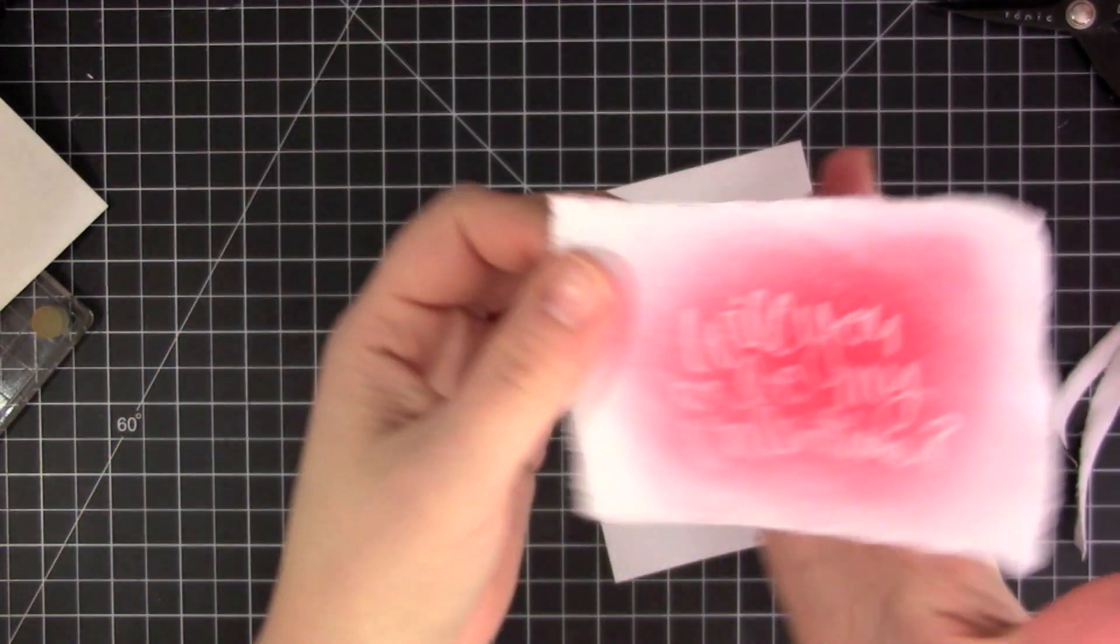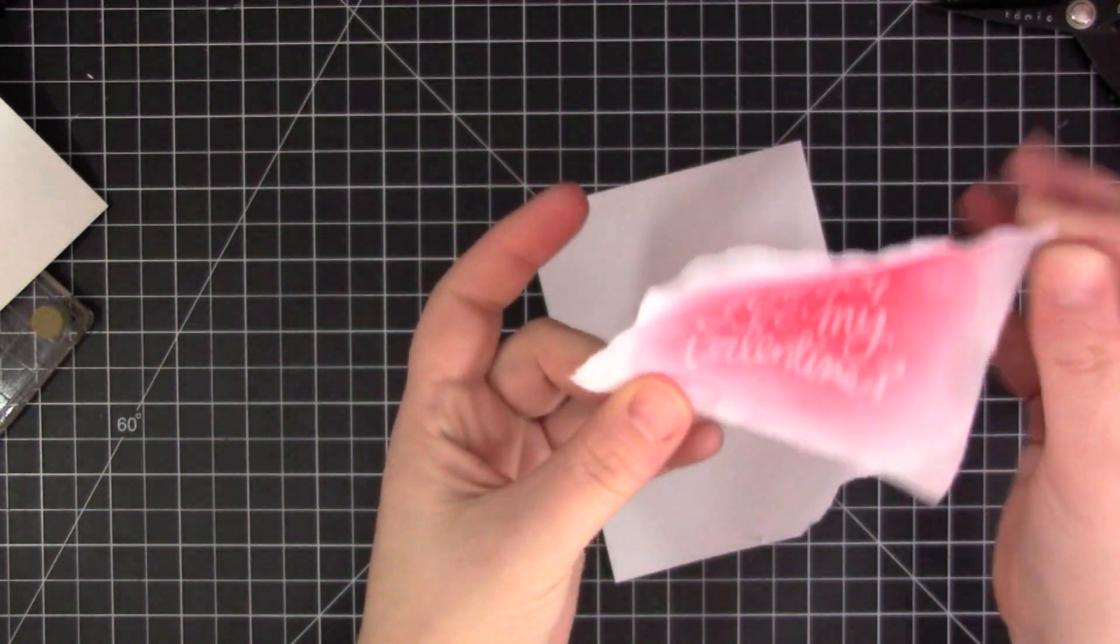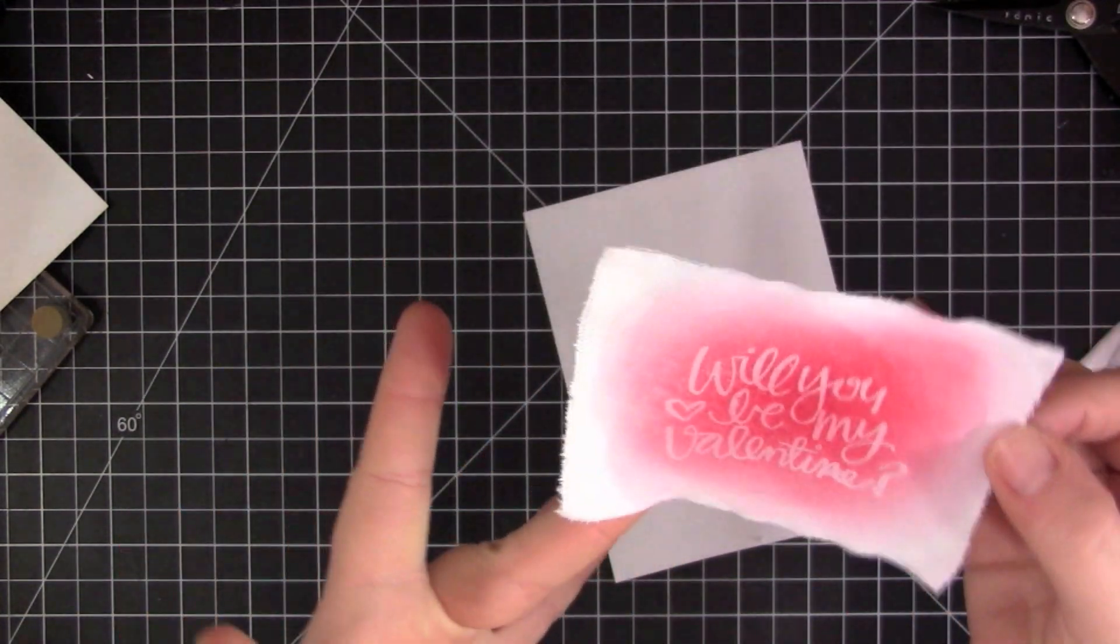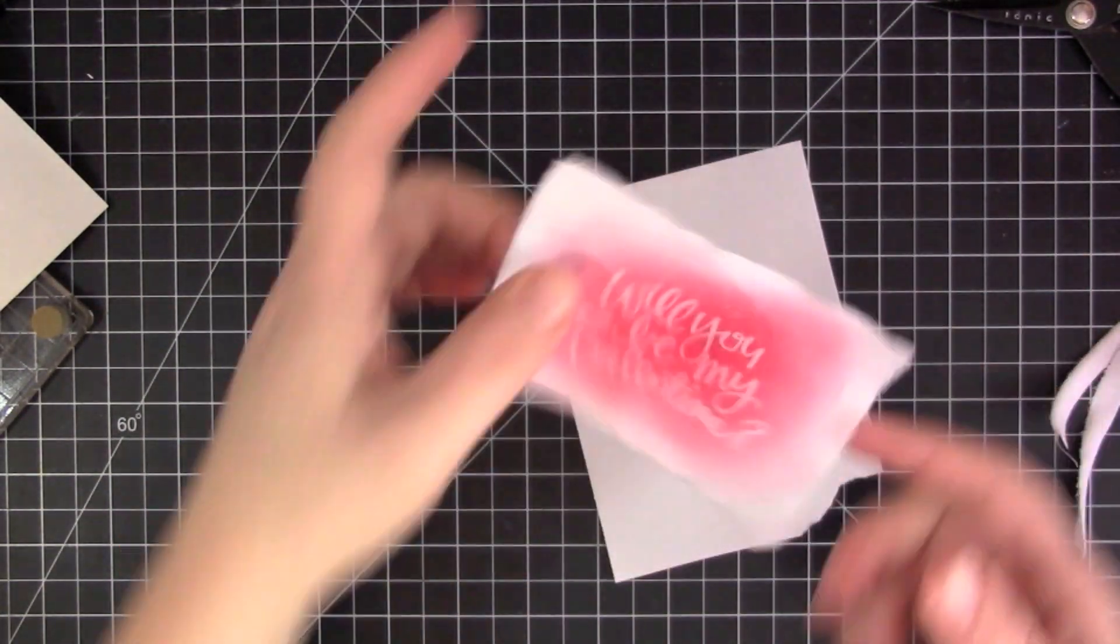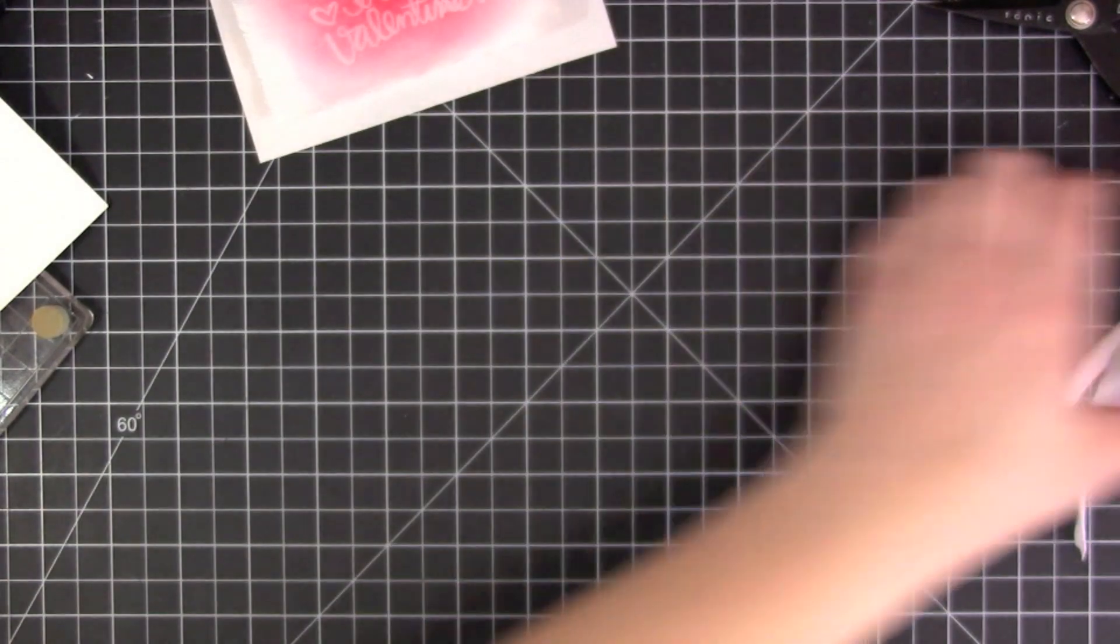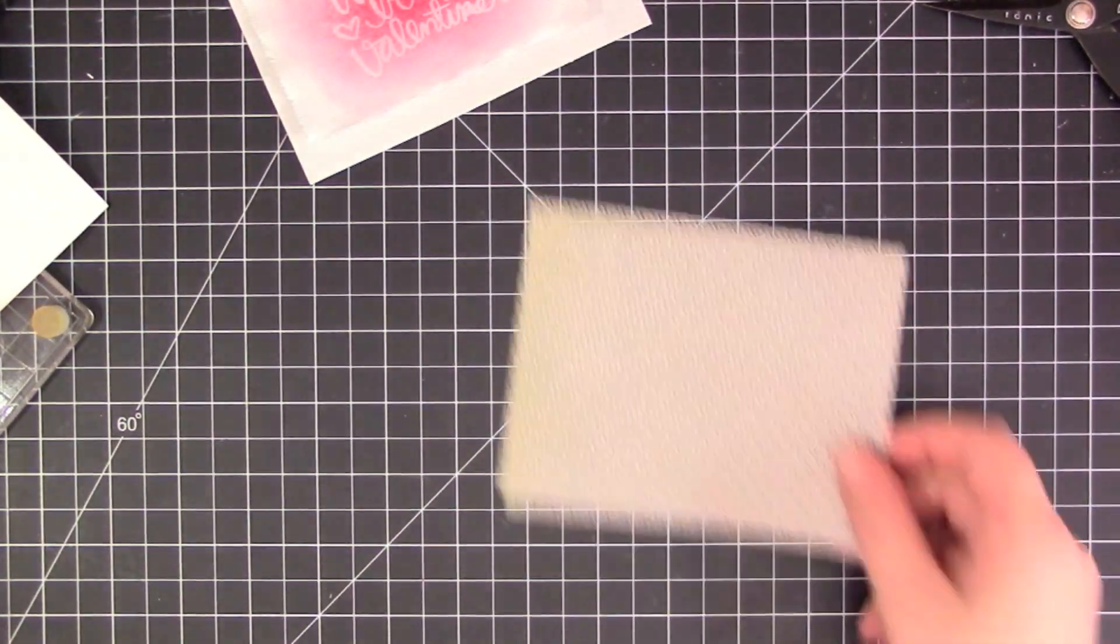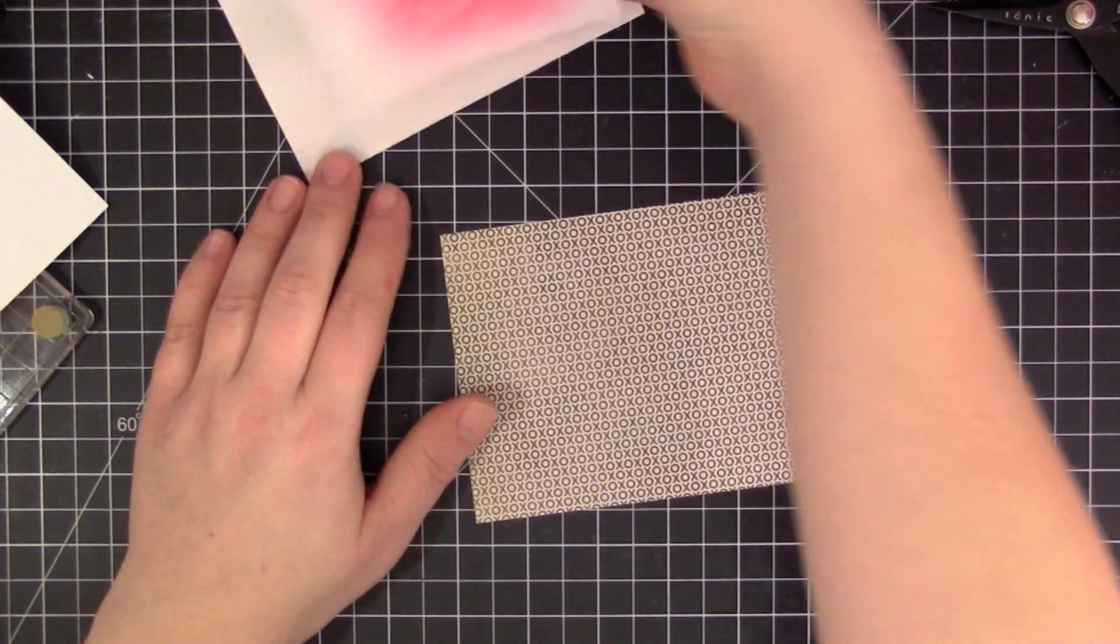I did that to all four sides. Now I have this great piece of canvas—it's already embossed, my ink is on, and it's ready to go. I'm just going to stick it back to the backing piece until I'm ready for it, then I'll adhere it directly onto my card.